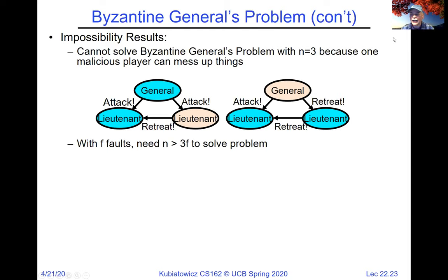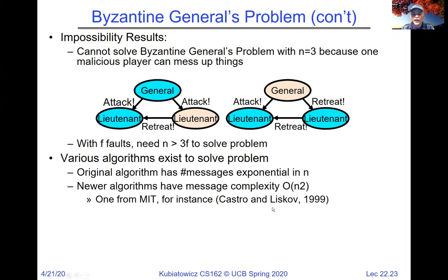It generalizes to show that if you have f malicious nodes, you need n greater than 3f total participants to solve this problem. The original algorithm was exponential in n. Newer algorithms from 1999 have complexity of about O(n²) in message complexity, which is doable, but you probably don't want n to be too big. In practice, systems have kept n to 4, 7, or 10 to avoid the message complexity getting too complicated.